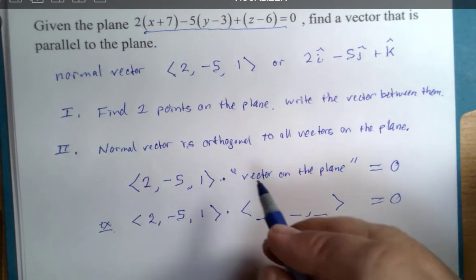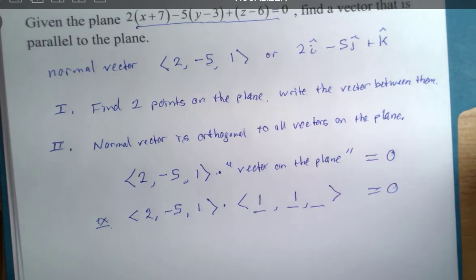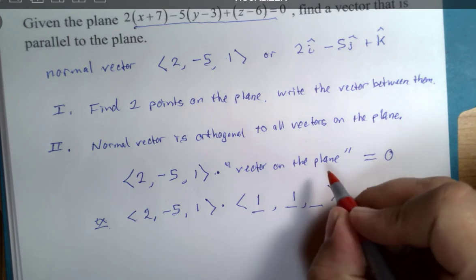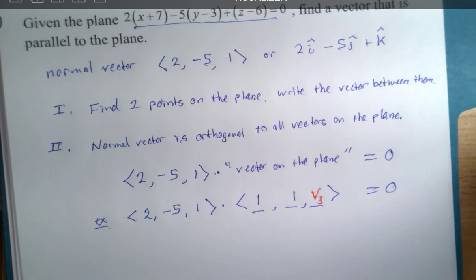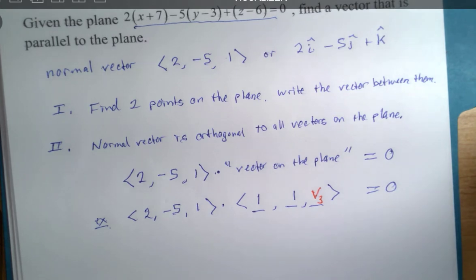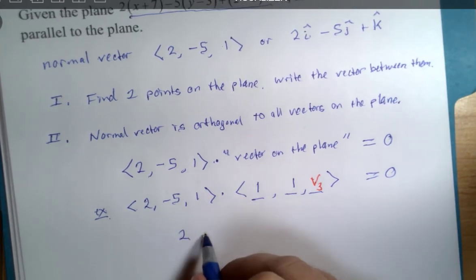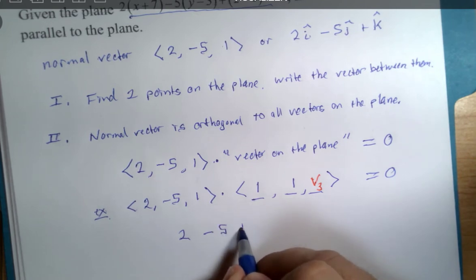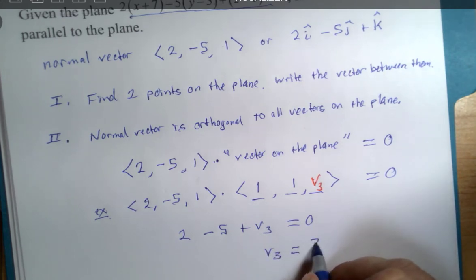I'm just going to go this route. So, what if I choose one and one, and I would like to find my, we'll call this third component, V3 for our vector third component, and let's just solve for that. And, two times one, negative five times one, plus V3 is zero, that's negative three, V3 would be equal to positive three.